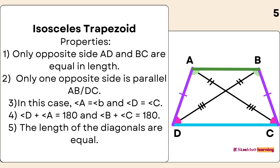Isosceles Trapezoid Properties. One: Only the opposite sides AD and BC are equal in length. Two: Only one pair of opposite sides is parallel (AB parallel to DC). Three: A equals B and D equals C. Four: D plus A equals 180, and B plus C equals 180. Five: The length of the diagonals are equal.